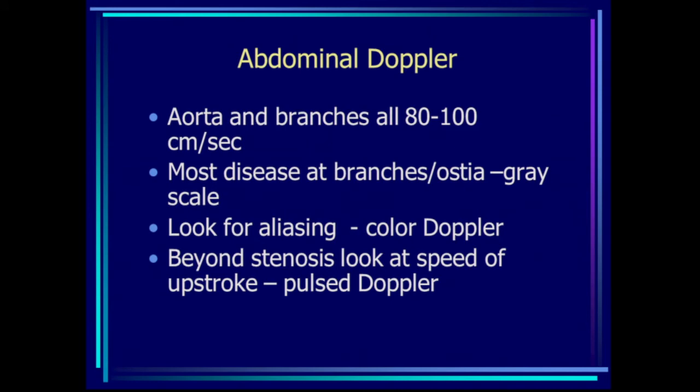It's easy to remember that the aorta and all of its branches have normal peak systolic velocities between 80 and 100 centimeters per second. That's an easy number to remember — 100 centimeters per second — whether you're talking about a renal artery or an inferior mesenteric artery. That's where you would expect the velocity to sit.